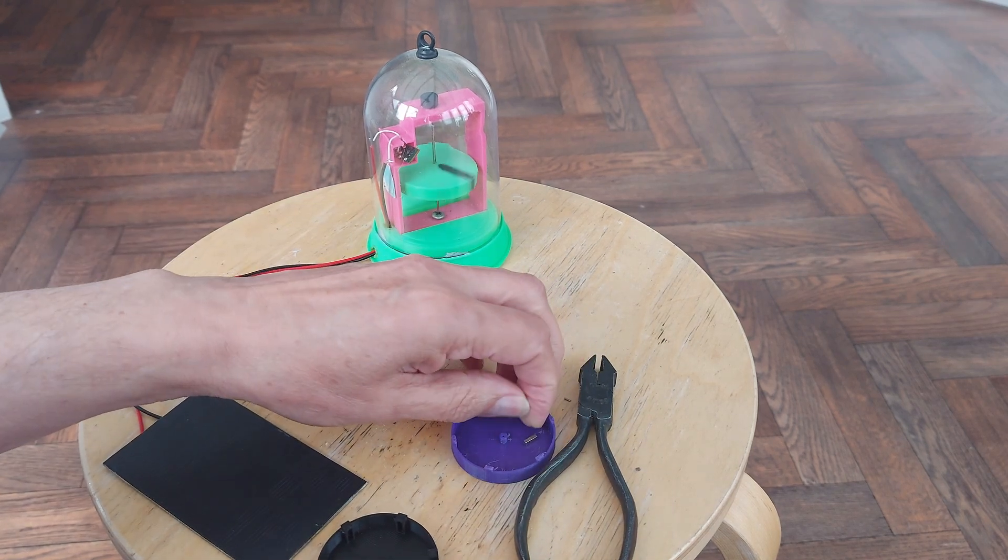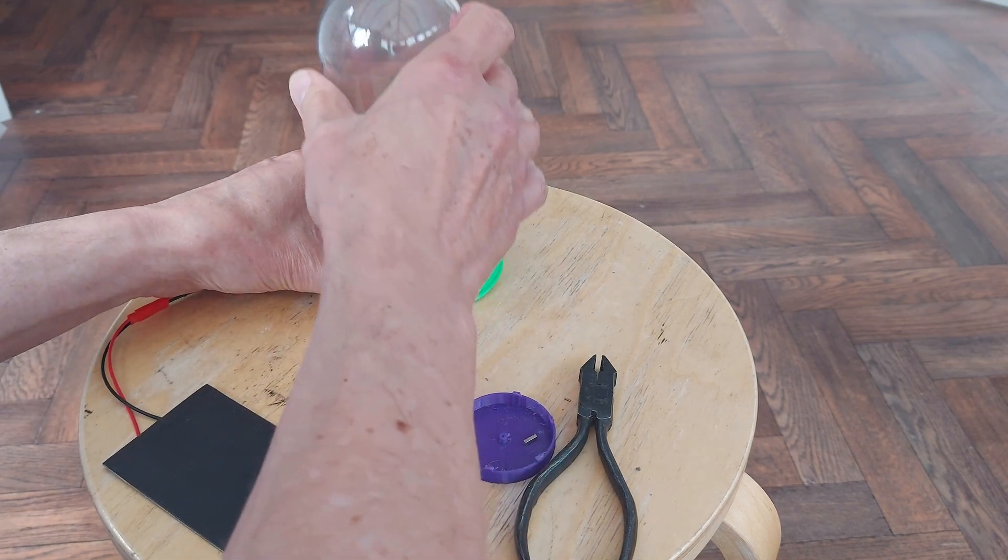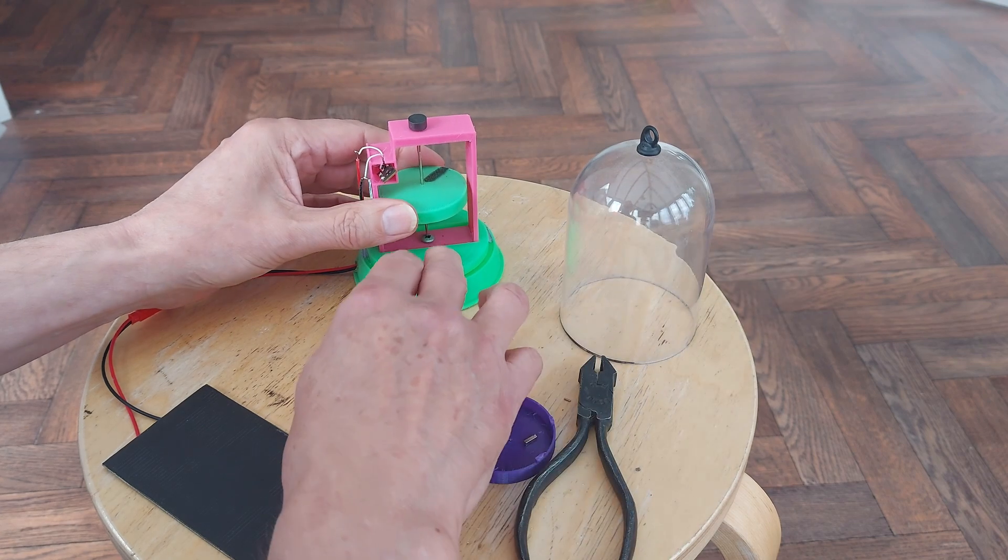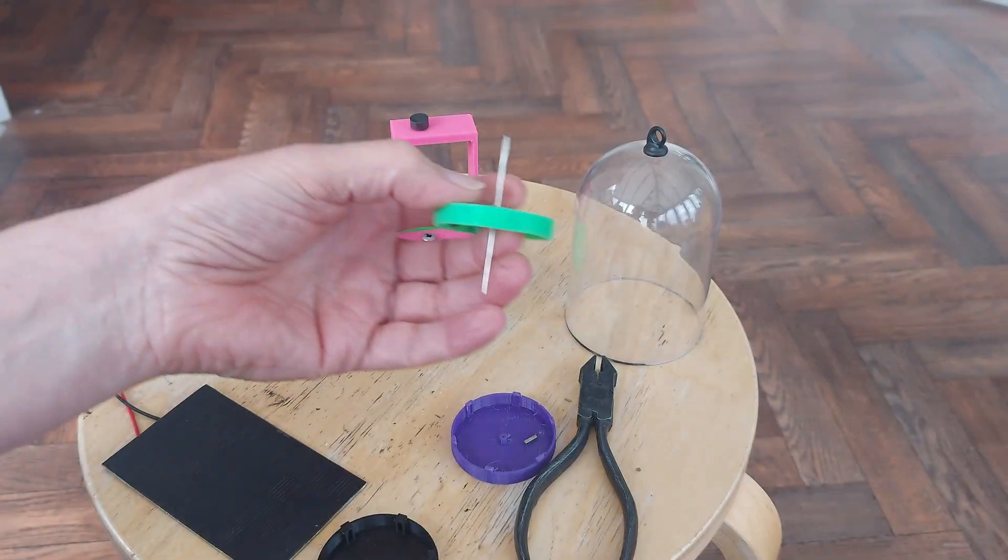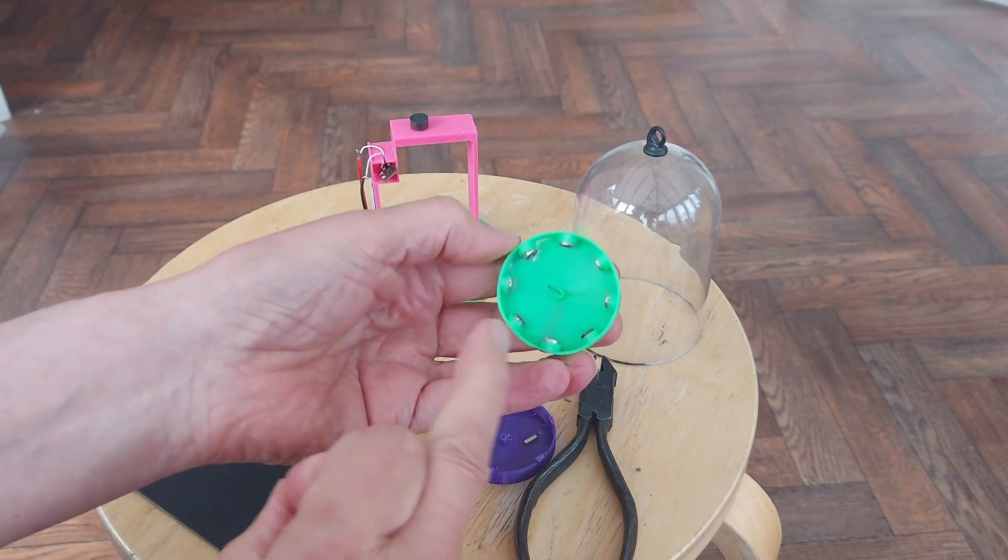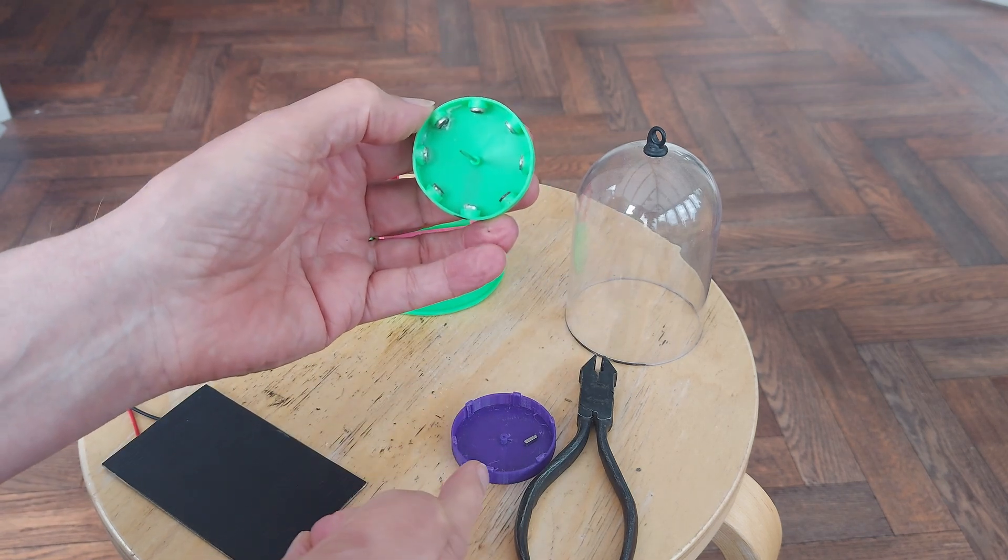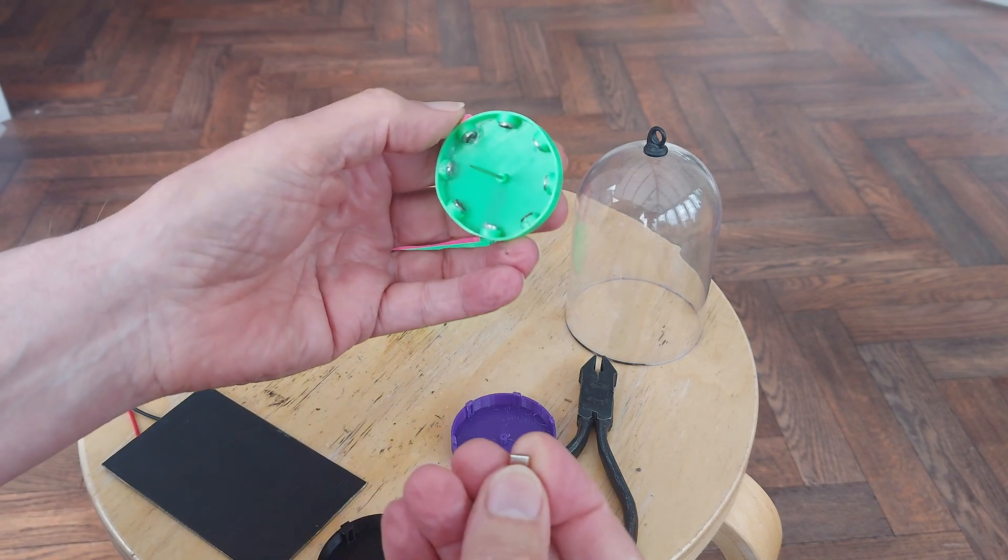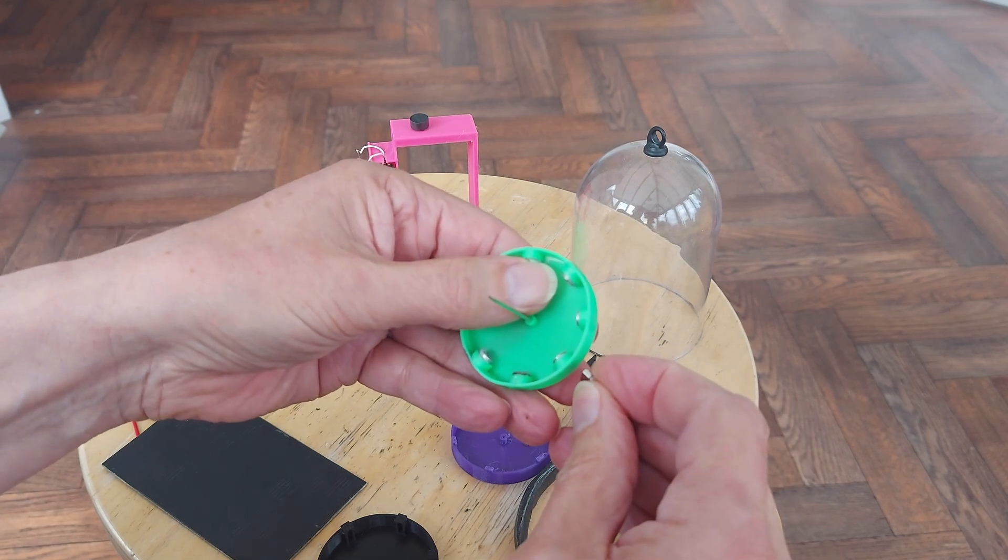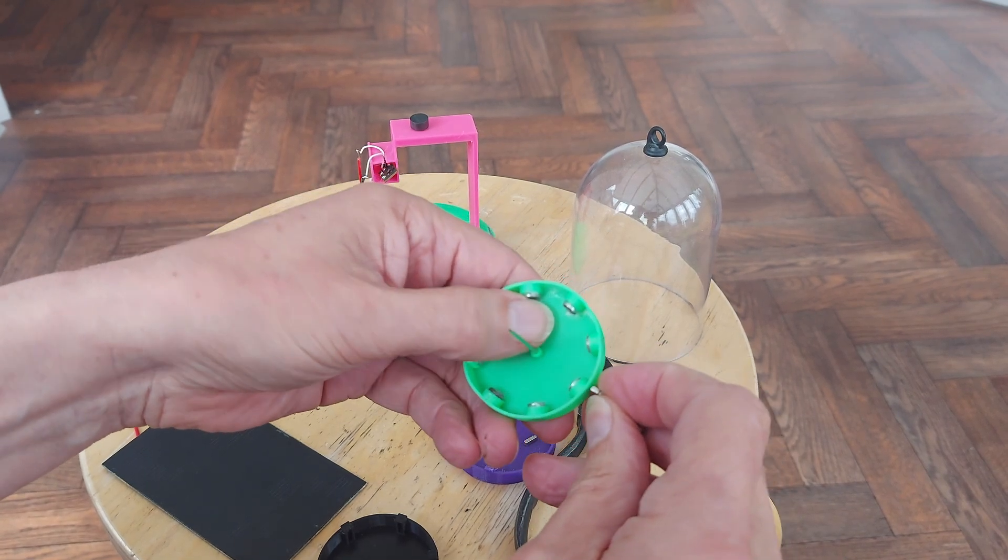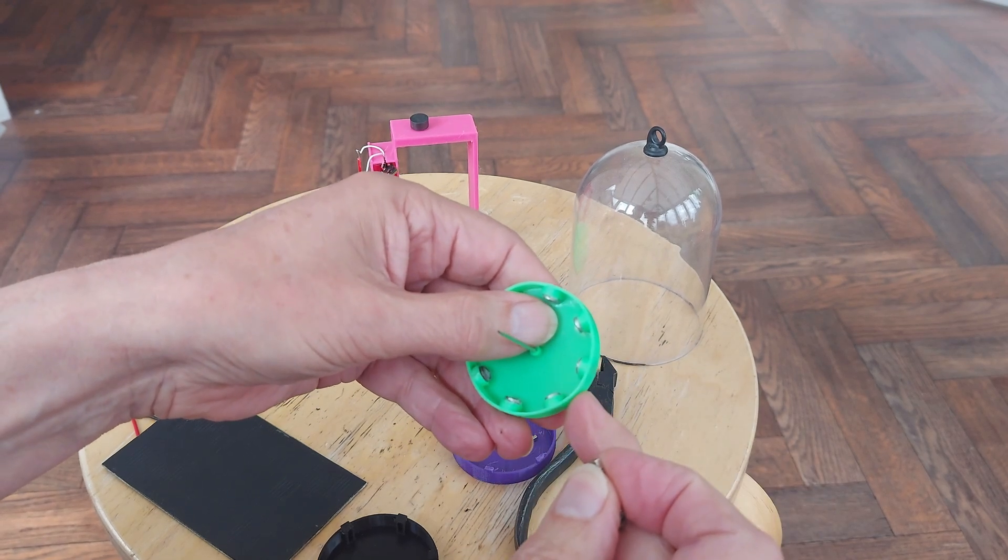So the only thing is I can't remember whether I've done these north, south, north, south, or all one way. So the easiest way to find out, this one's actually got eight magnets in it. We're only going to use six because I've only got six at the moment. We'll just see that's opposing, that's attracting, that's opposing, that's attracting. So they're going north, south, north, south all the way around.